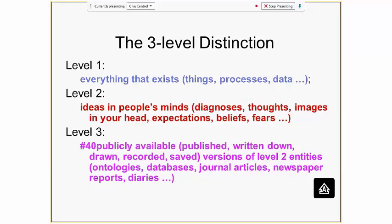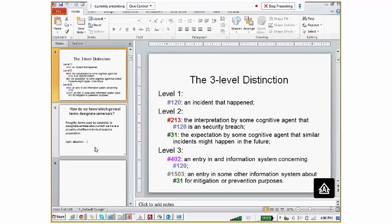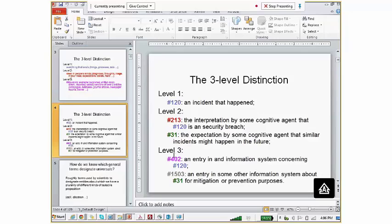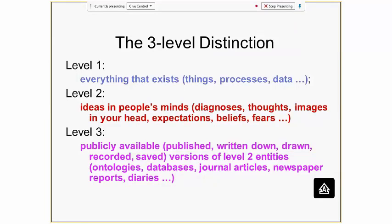Level three is another part of what exists, and it consists of what is publicly available from level two. So when I write down my thoughts, or when I create an ontology, or when someone else creates a scientific theory, we start off with ideas in our respective heads but move to something which is documented, written down, observable by others and shareable by others. That's level three.